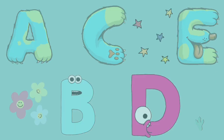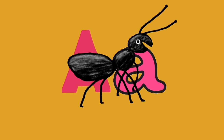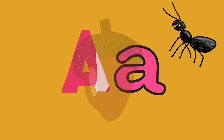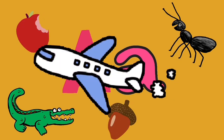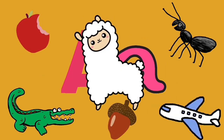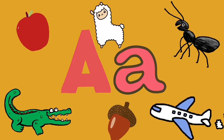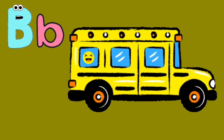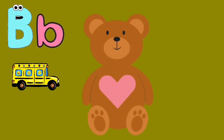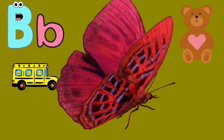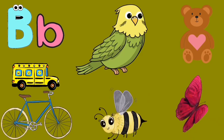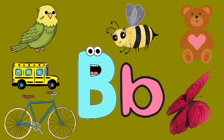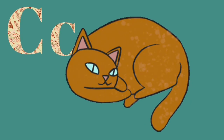A: ant, acorn, alligator, apple, airplane, alpaca. B: bee, bus, bear, butterfly, bicycle, bird.